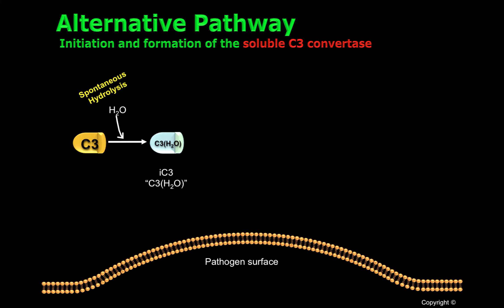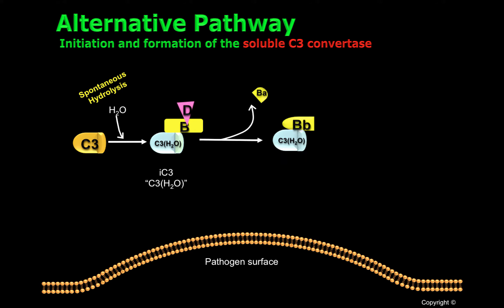C3 water is then recognized by factor B and other proteins found in plasma. Factor B bound to C3 water can be cleaved by factor D, generating soluble C3 convertase of the alternative pathway.